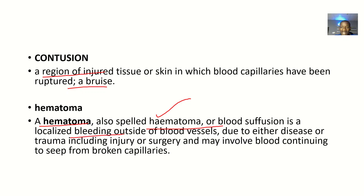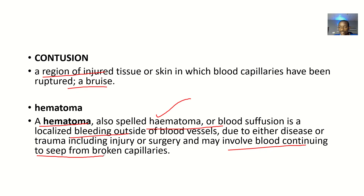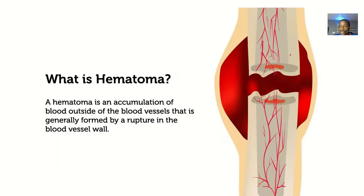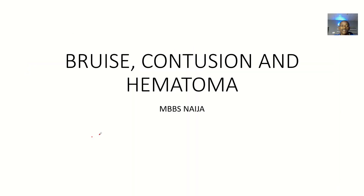Hematoma — also spelled with an 'a,' or blood suffusion — is localized bleeding outside the blood vessels due to either disease or trauma, including injury or surgery, and may involve blood continuing to seep from broken capillaries. Blood accumulates, seeping from vessels and collecting. So a hematoma is an accumulation of blood outside the blood vessels, generally formed by a rupture in the blood vessel wall. That's the differences between bruise, contusion, and hematoma.